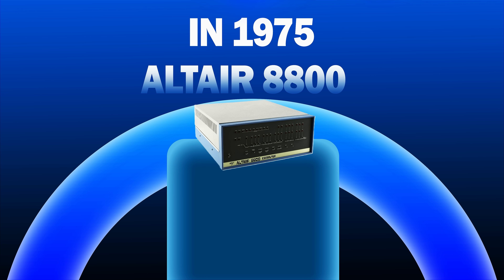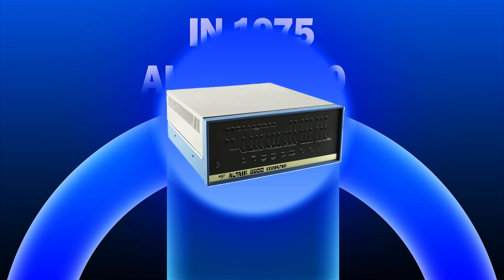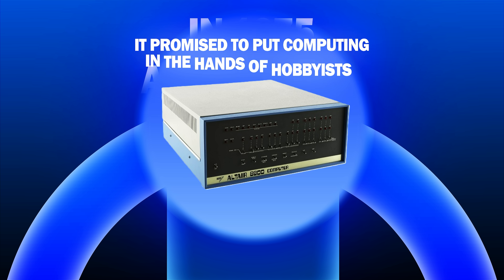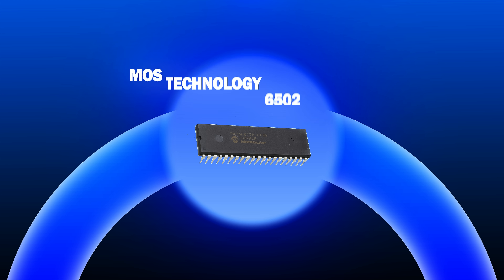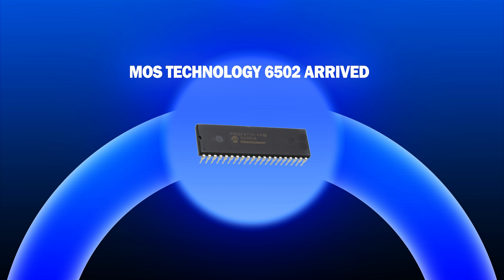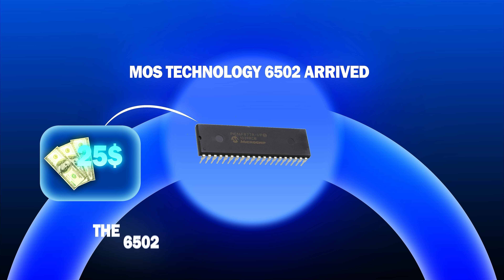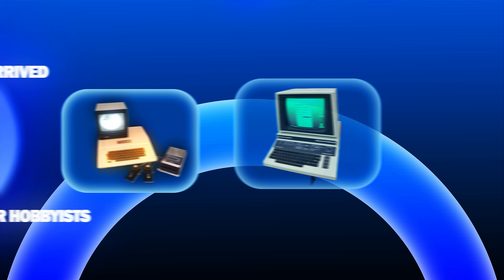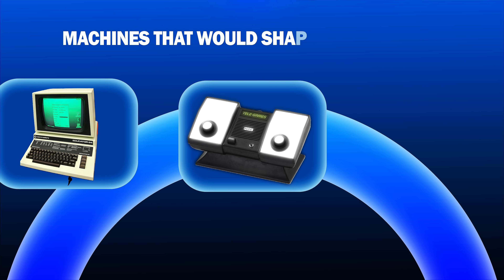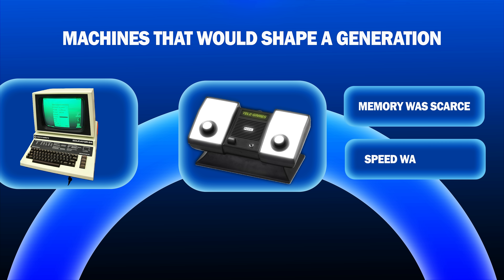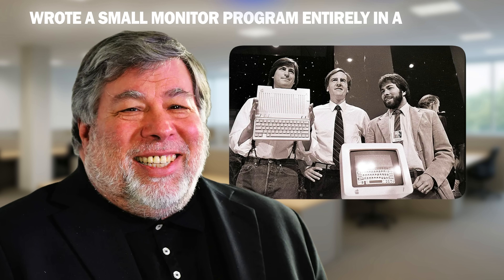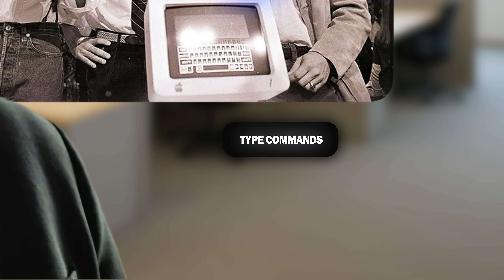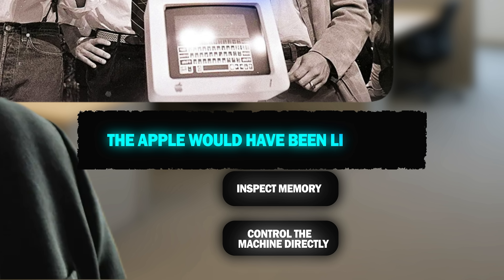In 1975, the Altair 8800 appeared on the cover of Popular Electronics — a box of switches and lights that promised to put computing in the hands of hobbyists. Soon, microprocessors like the MOS Technology 6502 arrived, cheap and powerful enough to change everything. At $25, the 6502 was affordable for hobbyists. It powered the Apple, Commodore 64, and Atari consoles — machines that would shape a generation. But memory was scarce and speed was limited. Every byte mattered. To make these machines sing, you needed assembly. Steve Wozniak, designing the Apple One, wrote a small monitor program entirely in assembly. It let users type commands, inspect memory, and control the machine directly. Without it, the Apple would have been lifeless.